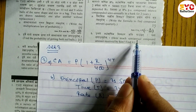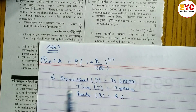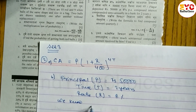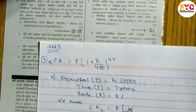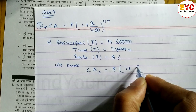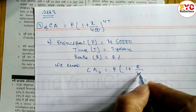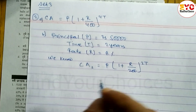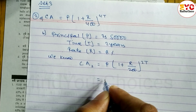For question B, how much semi-annual compound amount? We use the formula: CA equals P times (1 plus R divided by 200) to the power 2T.